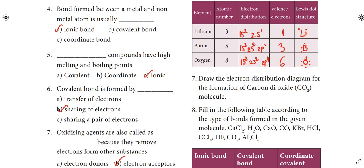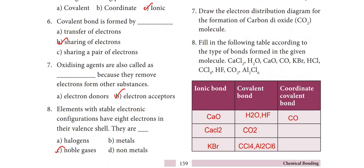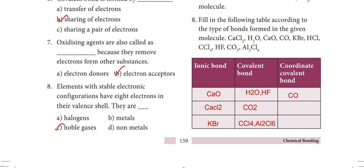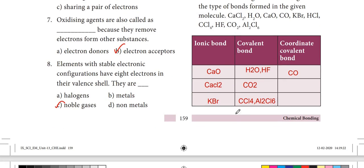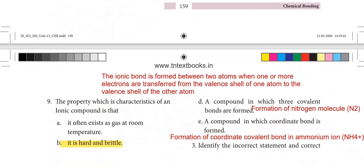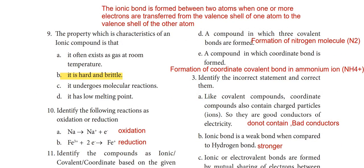Eighth question: fill in the table according to the type of bonds formed. Ionic bonds: CaO, CaCl2, KBr. Covalent bonds: H2O, HF, CO2, CCl4, Al2Cl6, CO.